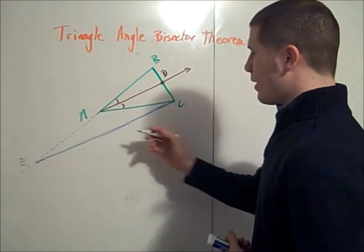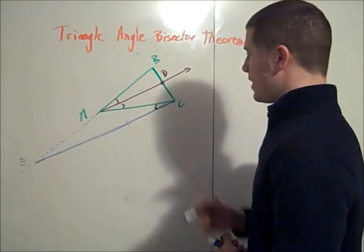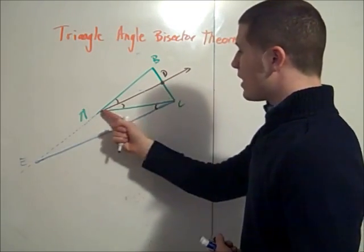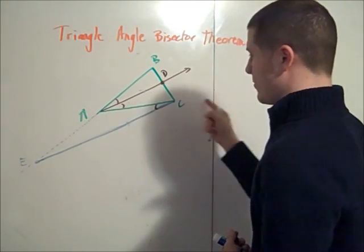Then by the alternate interior angle theorem, angle ACE is congruent to angle DAC. I've got these two parallel lines here, cut by this transversal.